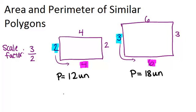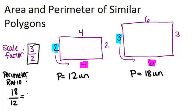So what's the ratio between the two perimeters? Well, we want to look at the ratio between the larger perimeter to the smaller perimeter because that's what we did for the scale factor. So the ratio of the perimeters would just be 18 over 12, and 18 over 12 reduces to three over two if you divide both the numerator and the denominator by six.